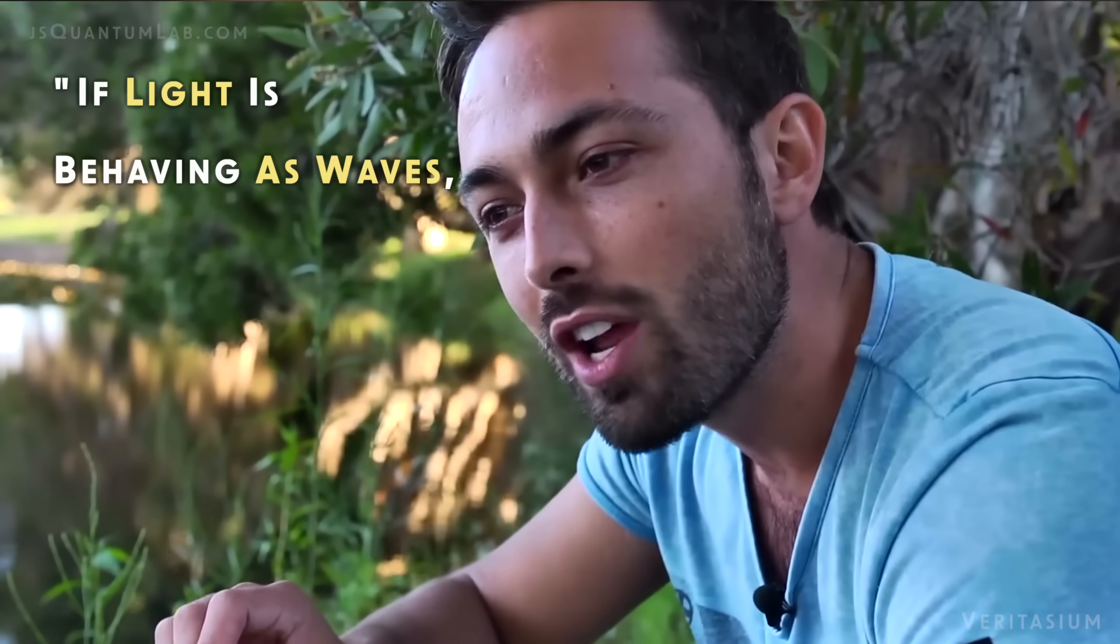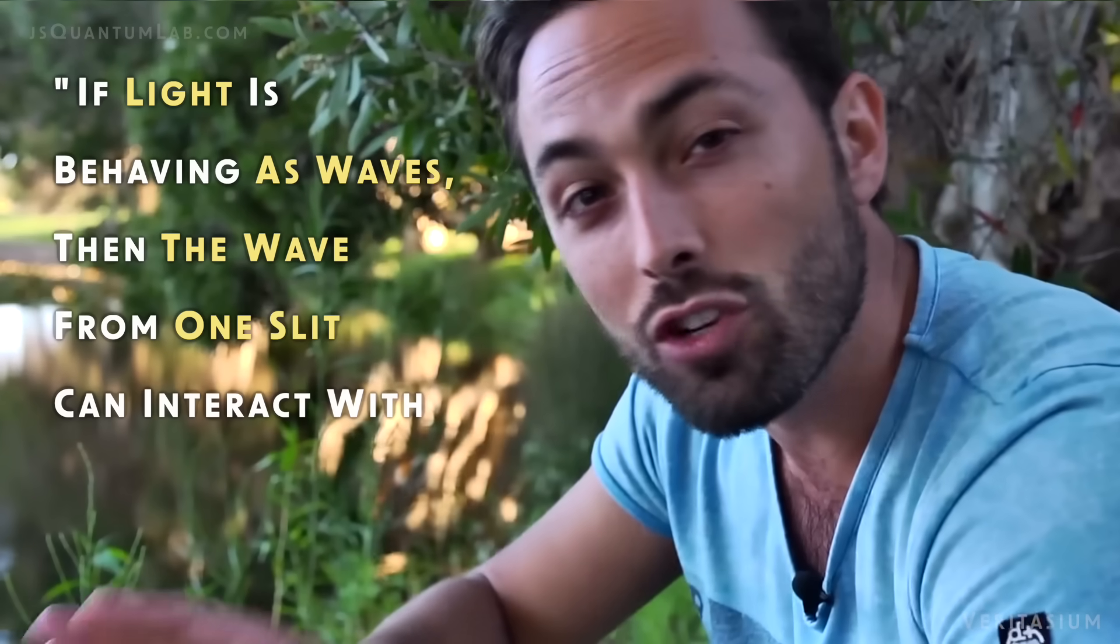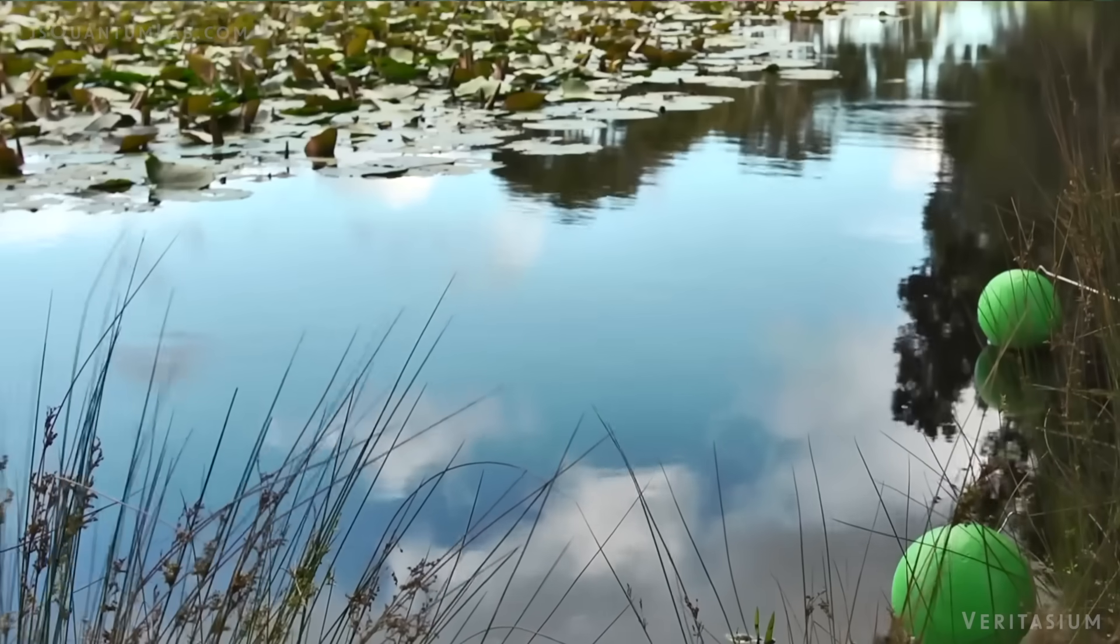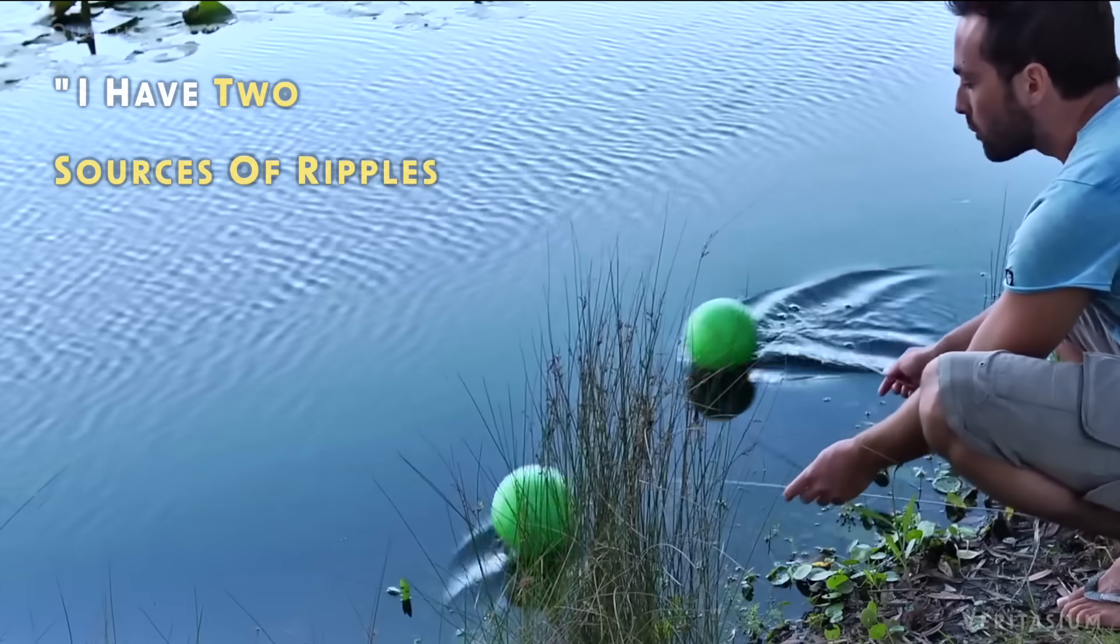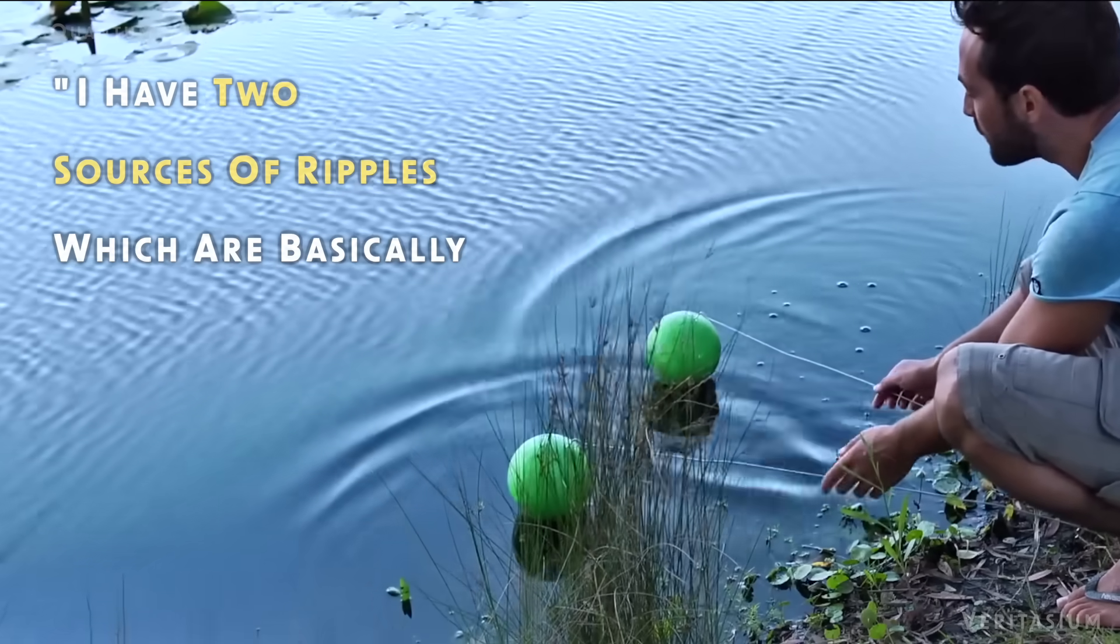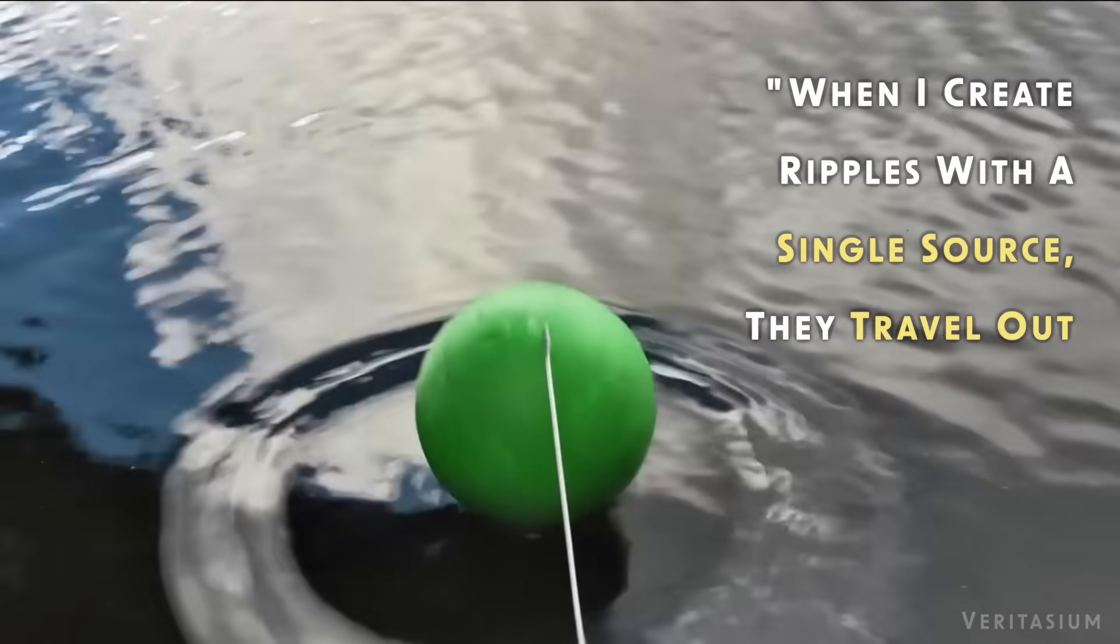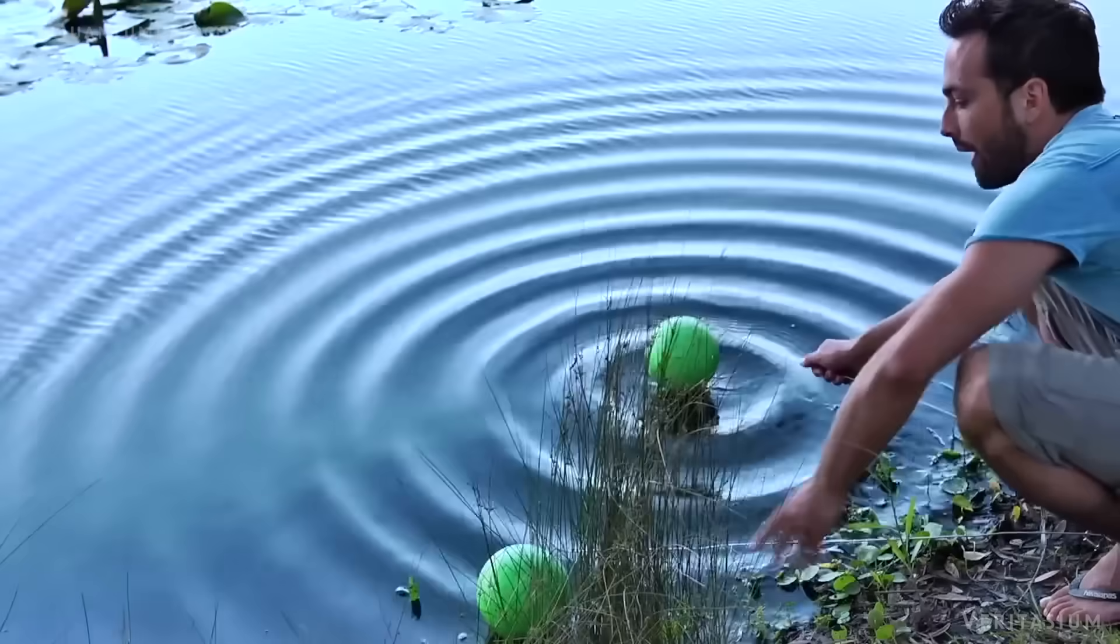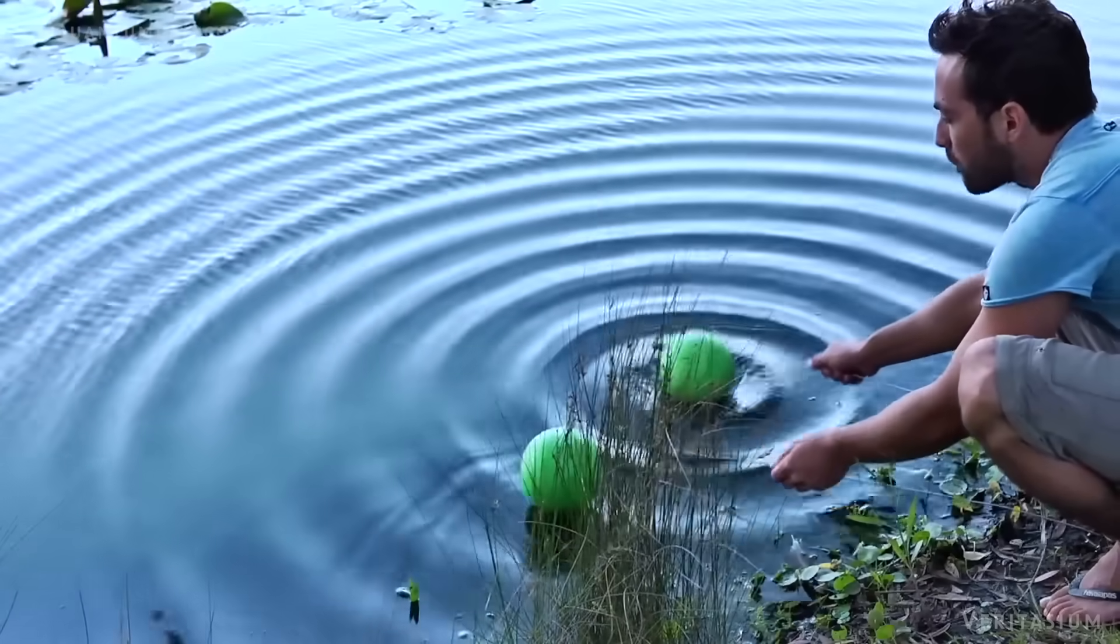But if light is behaving as waves, then the wave from one slit can interact with the waves from the other slit. I have a demonstration here on a little pond where we can see this with water waves. I have two sources of ripples, which are basically like the two slits. When I create ripples with a single source, they travel out with circular wave fronts. Nothing particularly surprising there.